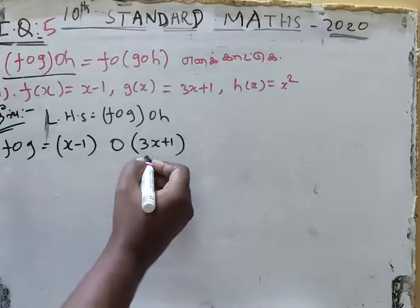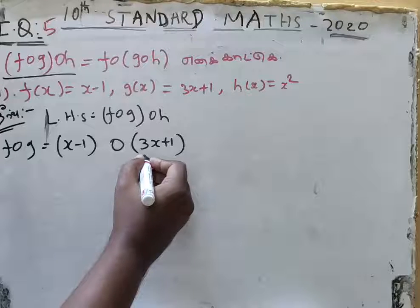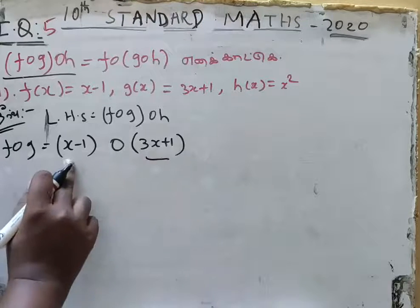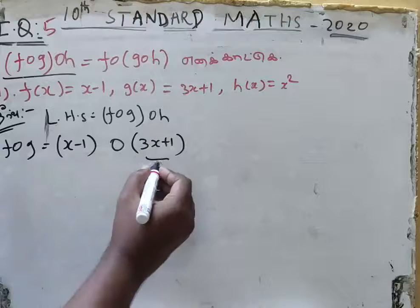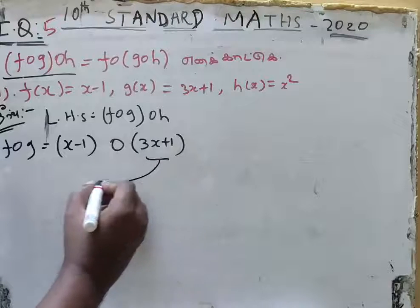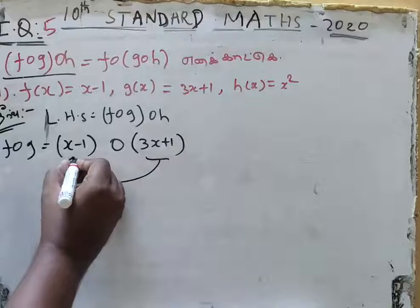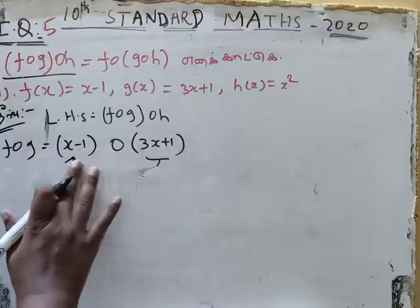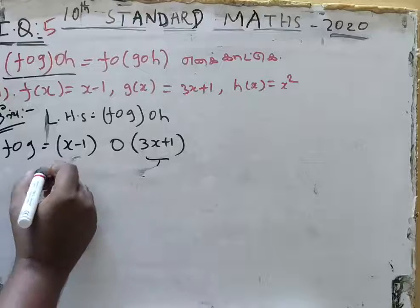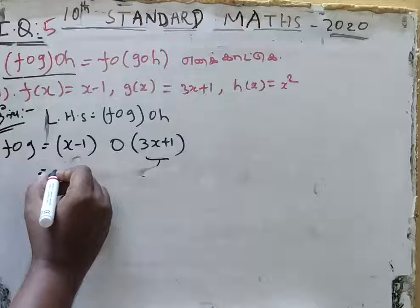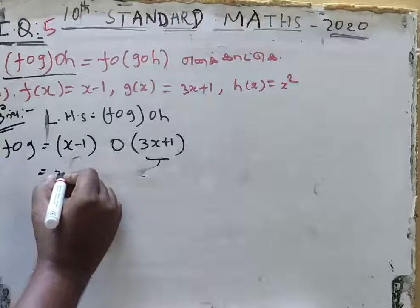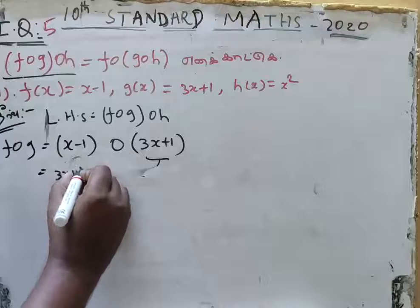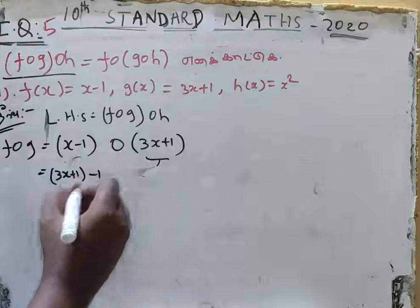The value of 1 substituted using the substrate formula: 3x plus 1 substituted into the formula. So x is replaced by 3x plus 1, giving 3x plus 1 minus 1.